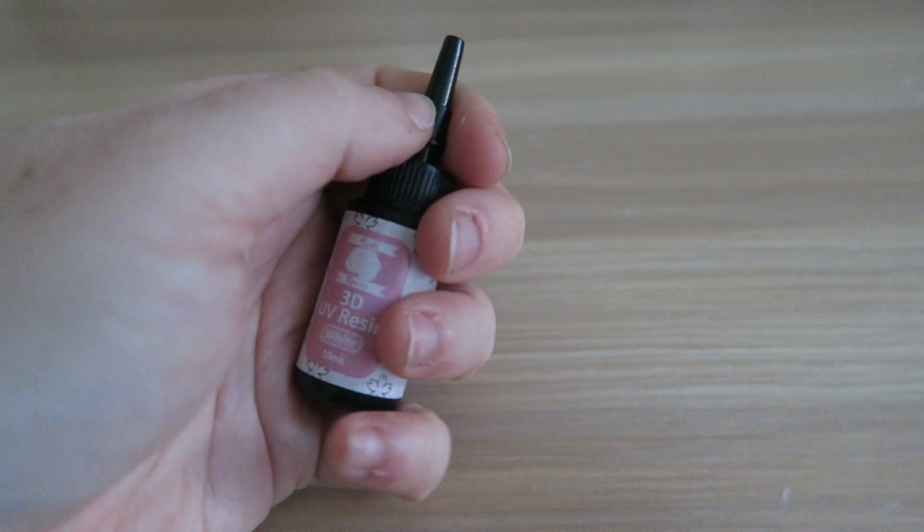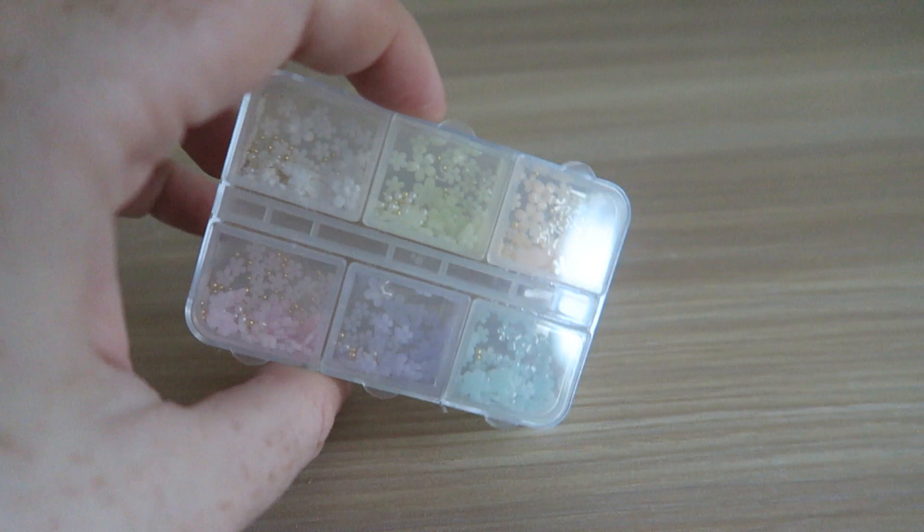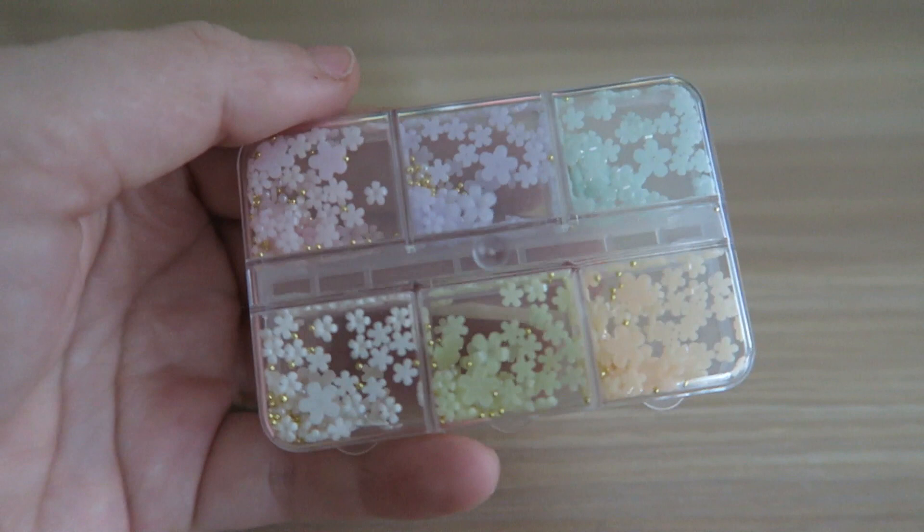Next we have some white air dry clay. It is Modena brand and it's imported from Japan. Next we have this set of flower embellishments as well as some microbeads and pearls to use as the centers of the flowers.